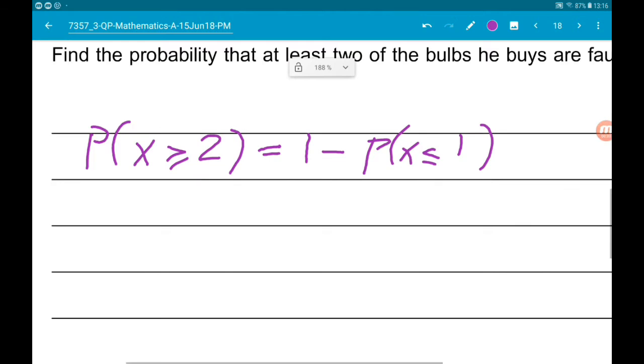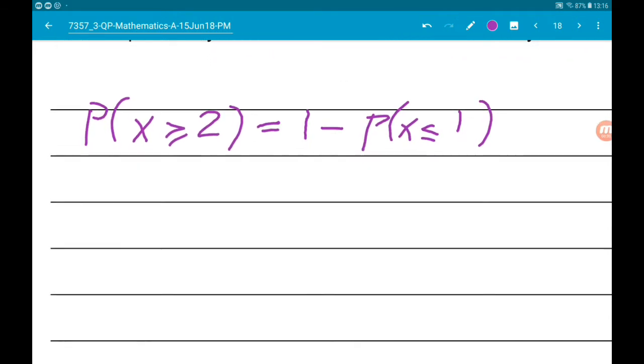Now using your calculator, again I'm using the Casio Classpad, we can find the probability that X is less than or equal to 1. So what you want is go on to your menu. On mine it's 7 for distribution. Then you want binomial CD. That stands for cumulative distribution.